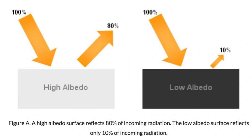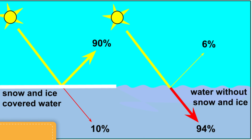Albedo effect: the concept of albedo refers to the amount of sunlight an object reflects back into space. Lighter colored objects have higher albedo, meaning they reflect more sunlight, while darker colored objects have lower albedo and absorb more sunlight. This phenomenon contributes to the earth's climate system, as dark surfaces like forests or oceans absorb more heat and contribute to local and global temperature variations.